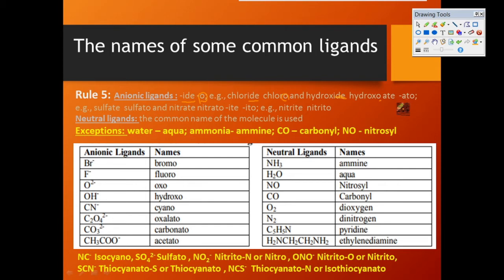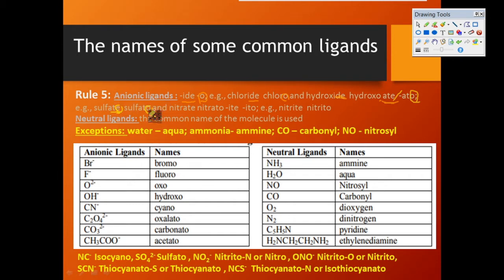The second case: ligands that end with '-ate' must have the final '-e' replaced with '-o', giving '-ato'. For example, sulfate ends with '-ate', so the final 'e' is replaced with 'o' to give 'sulfato'. Similarly, nitrate becomes 'nitrato'.